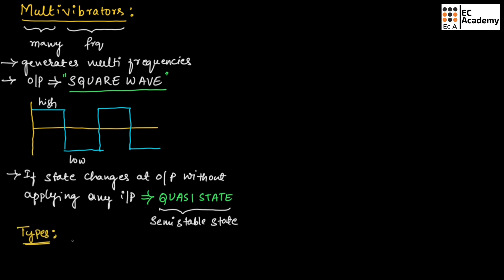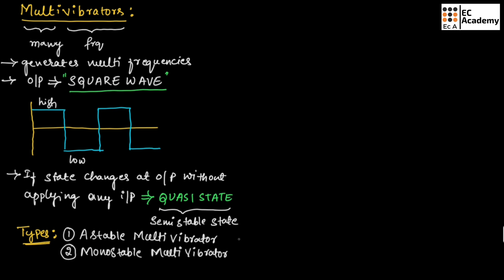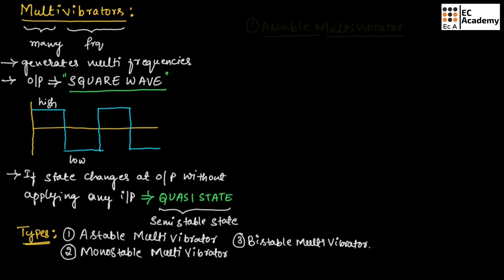With this knowledge, let us see the types of multivibrators. There are three types: the first is the astable multivibrator, the second is the monostable multivibrator, and the third is the bistable multivibrator.